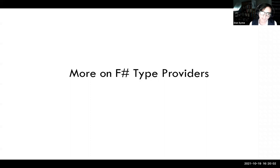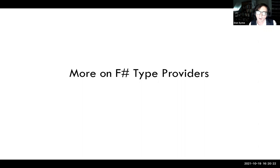A lot of what I talk about can also apply to C-Sharp source generators and future extensions, as well as to Scala macros. Much of this work is from about six to seven years ago. So why do we do this thing called type providers? What are we aiming for?